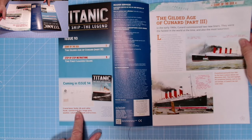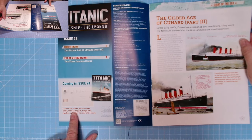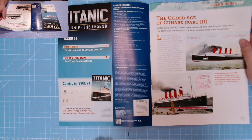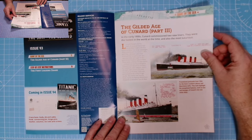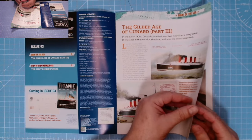Okay, Issue 93. There we go. Coming in Issue 94: crane base body, jib and cable hook, connecting pin, hinge pins, washer, columns, tire rods, and screws. Excellent.